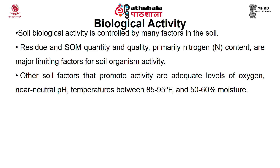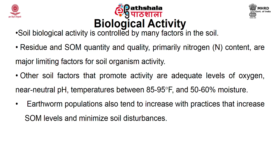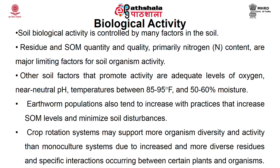Tillage typically accelerates short-term bacteria and protozoa activity by increasing aeration and breaking up residue into smaller particles that are more exposed to microbial attack. Conversely, fungal biomass has been shown to increase in conservation tillage systems, possibly as a result of less tillage disruption, as fungal hyphal networks increase soil organic matter levels. Earthworm populations also tend to increase with practices that increase soil organic matter levels and minimize soil disturbance. Crop rotation systems may support more organism diversity and activity than monoculture systems, due to increased and more diverse residues and specific interactions occurring between certain plants and organisms.